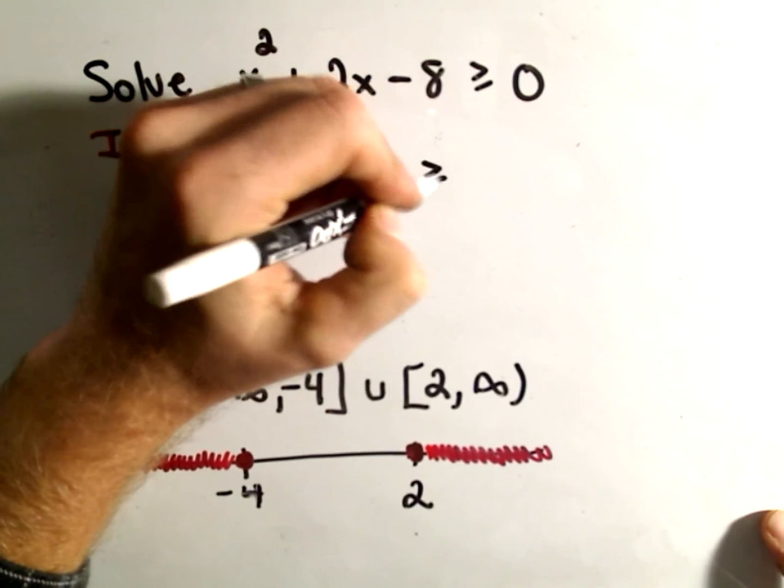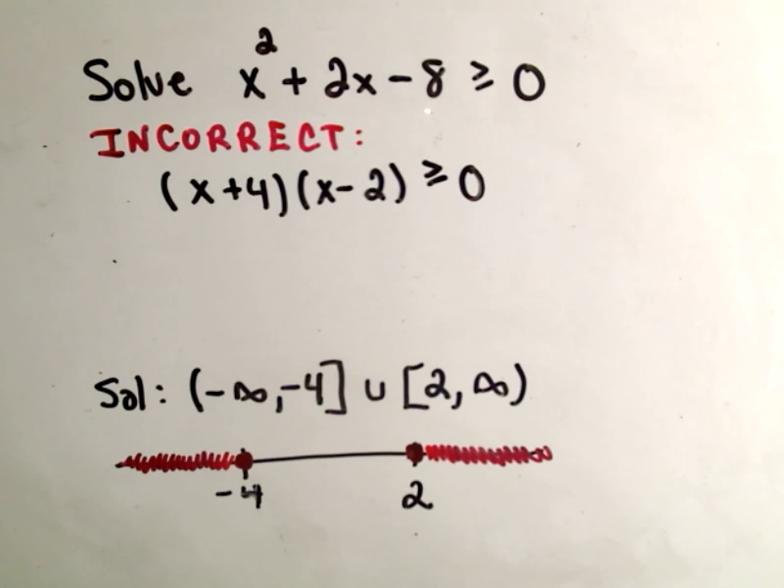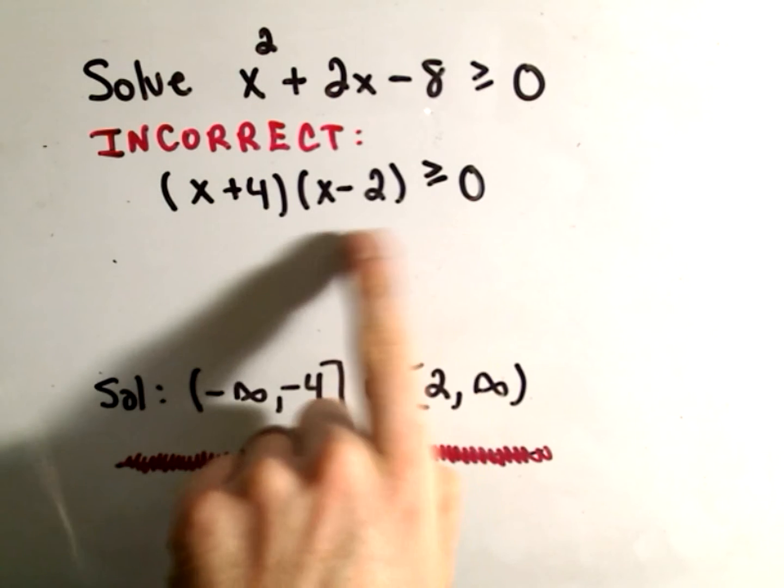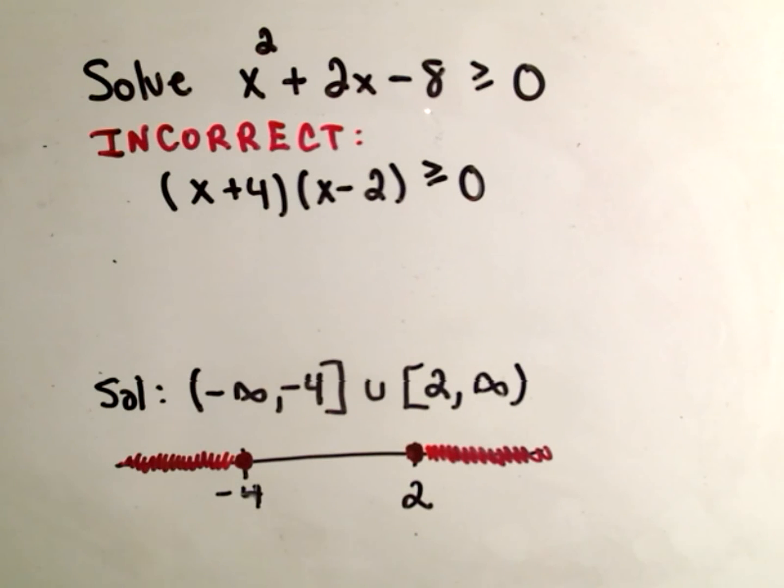So, our inequality has to be greater than or equal to 0. And now, what people will do is, if it was an equation, you set each piece equal to 0. But if it's an inequality, you can't do the following.